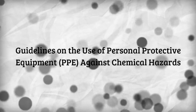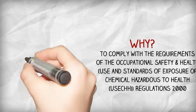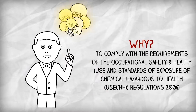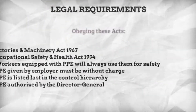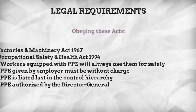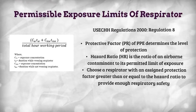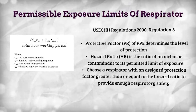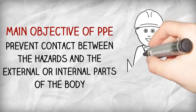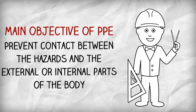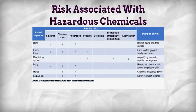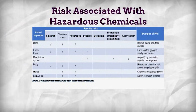Guidelines for the use of personal protective equipment (PPE) against chemical hazards. To comply with the requirements of OSHA regulation 2000, permissible exposure limits for respirators are determined by the hazard ratio. The main objective of PPE is to prevent contact between hazards and the human body. The table shows the risks associated with hazardous chemicals.